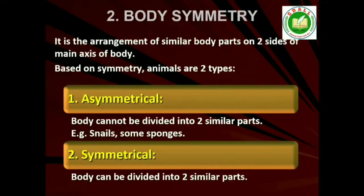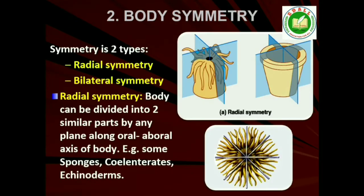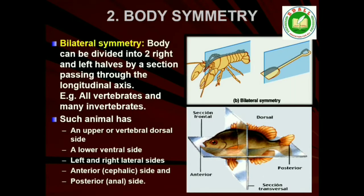2. Symmetry: Animals can be categorized on the basis of their symmetry. Sponges are mostly asymmetrical — any plane that passes through the center does not divide them into equal halves. When any plane passing through the central axis of the body divides the organism into two identical halves, it is called radial symmetry. Coelenterates, ctenophores and echinoderms have this kind of body plan. Animals like annelids and arthropods, where the body can be divided into identical left and right halves in only one plane, exhibit bilateral symmetry.